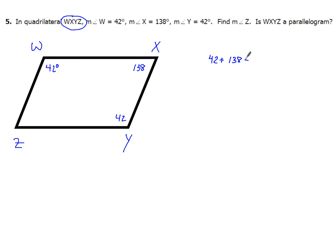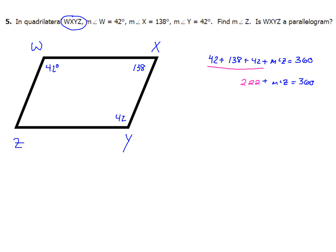The measure of angle Y is 42, and Z I don't know yet, so I'll put the measure of angle Z — and all of that equals 360 degrees. Z is the missing piece. When I add up those three known angles, I get a total of 222, plus the measure of angle Z equals 360. I want to subtract 222 from both sides to solve for angle Z.